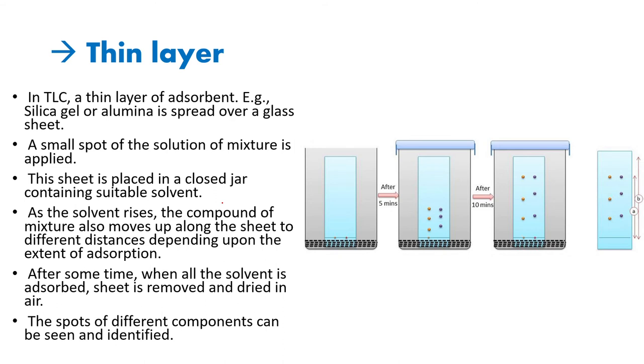The thin layer chromatography process: first, we prepare a TLC plate. Between two glass plates, we fill a thin layer of adsorbent, such as silica gel or alumina. Then, on the plate, we mark a starting line, and on that starting line, we place a small fraction of the mixture. Then we place this TLC plate in a closed jar with a suitable solvent.